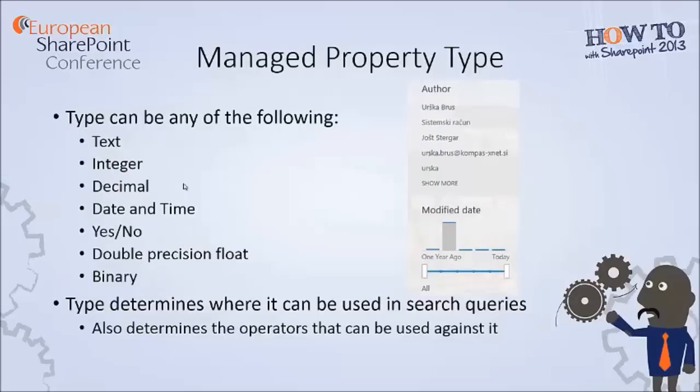A managed property type can have a specific data type, which determines how the managed property can be used in queries and other places in the SharePoint UI. If a managed property is propagated automatically by the search service application, the data type will be defined based on the data type of that crawled property. If you create your own managed property, you can set the data type yourself. The data type defines what kind of operators you can use in KQL and how the managed property, if defined as refinable, will be displayed in the refinement web part. For example, author, which is a text type, is displayed differently than modified date, which is a datetime data type.